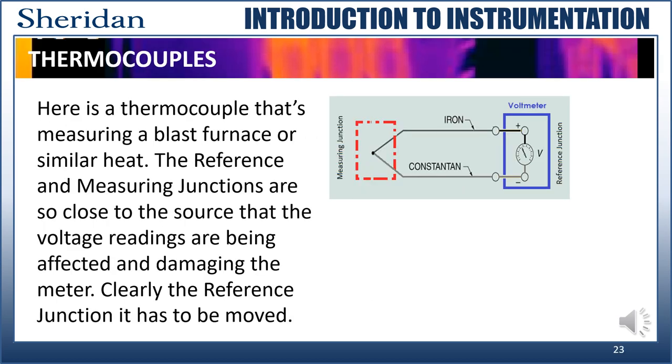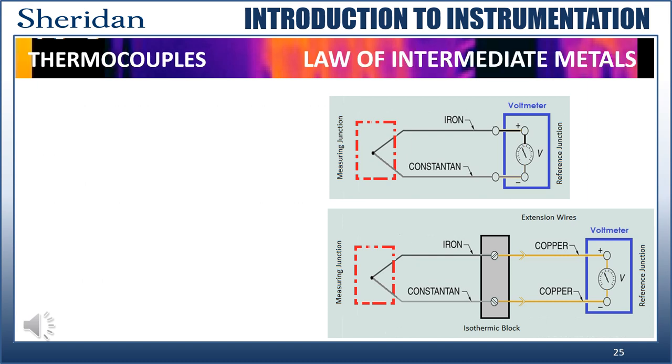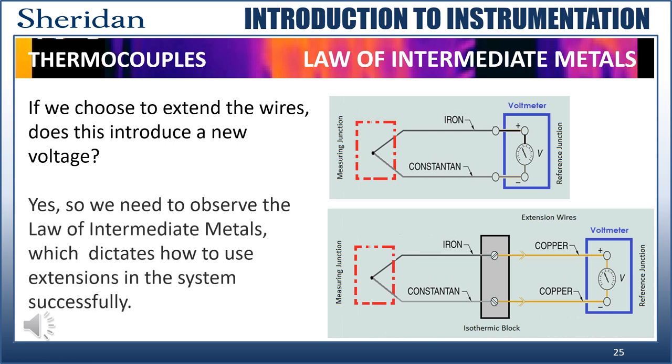Here is a thermocouple measuring a blast furnace or similar heat. The reference and measuring junctions are so close to the source that the voltage readings are being affected and damaging the meter. Clearly, the reference junction has to be moved. The solution is to extend the circuit to a place where a proper temperature differential can be created by the distance and a cooler location for the reference junction. Notice that the new wires are different than the original. These are called extension wires. We have extended our thermocouple circuit to a different location, and we use different metal extension wires. If dissimilar metals and a difference in heat can cause a voltage, wouldn't this junction do so as well? The answer is yes.